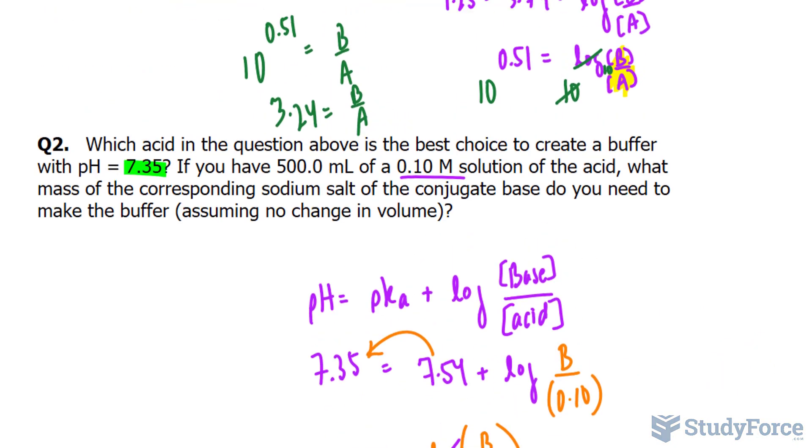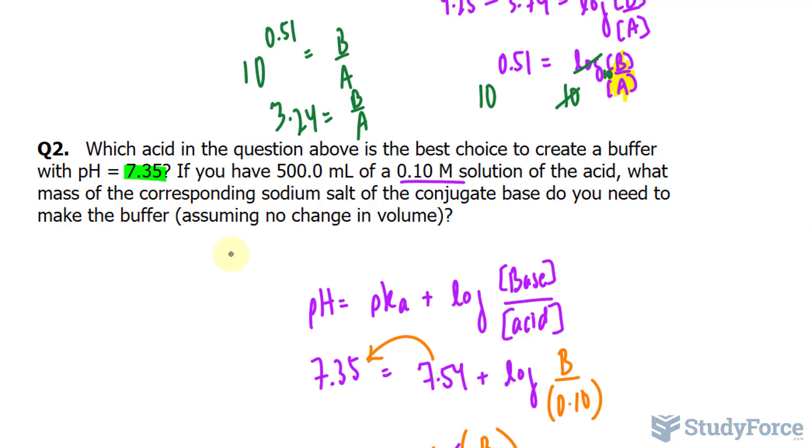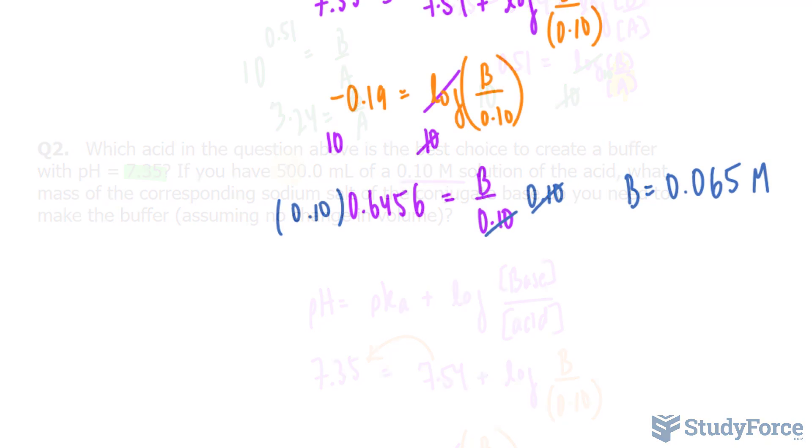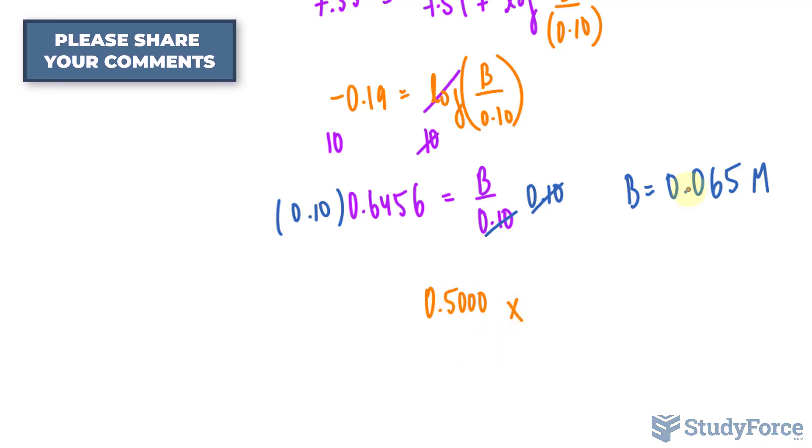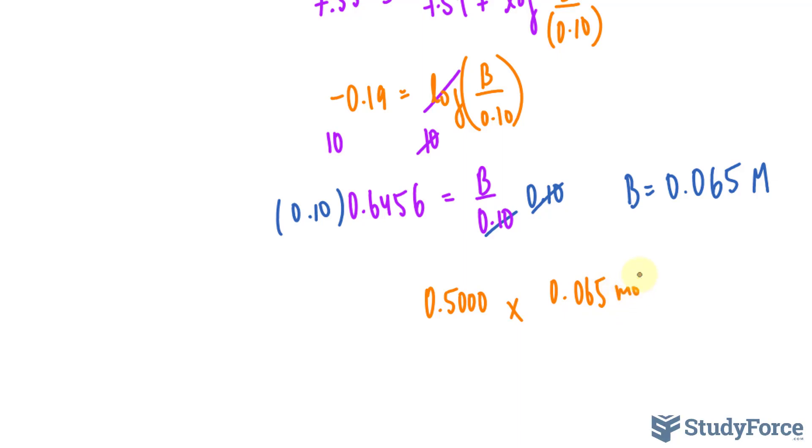Now going back to the question, they were asking for the mass of the corresponding sodium salt. So they've given us 500.0 milliliters. I'm going to take that number, change it into liters, and then multiply it to this. That way I get the moles of the base. We'll need that for later. So 500 milliliters into liters is 0.5000, notice the four significant figures, multiply to 0.065 moles per liter.